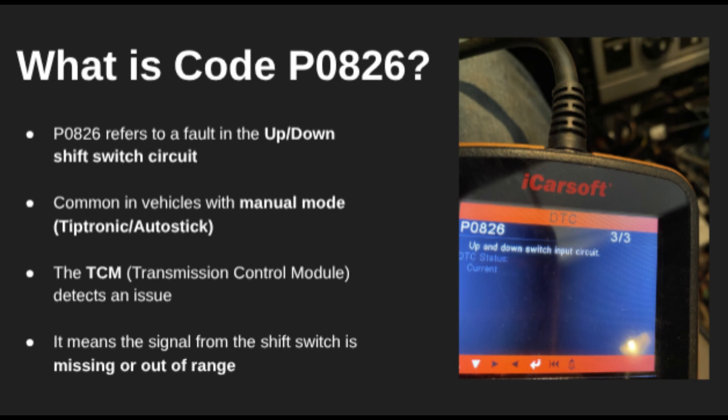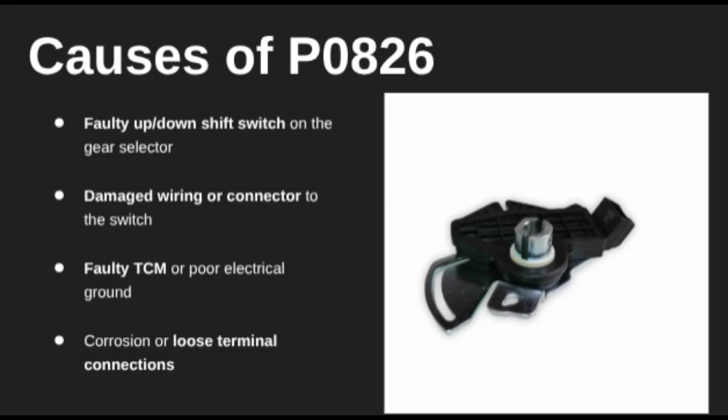This code usually pops up in vehicles with a manual shift mode, like a Tiptronic or Autostick system, and tells us there's a problem in the switch circuit that allows you to manually control gear changes. The P0826 code is triggered when the transmission control module doesn't get the right signal from the up/down shift switch located in the gear selector.